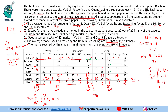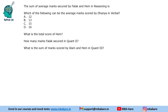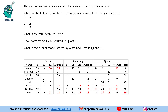Now we can move on to the questions with the completed table. The first question: sum of average marks secured by Falak and Hame in Reasoning is 29. The second question: total score of Hame is 39. Third question: Falak secured 13 marks in Quant 2. Fourth: sum of marks scored by Alam and Hame in Quant 3 is 24.